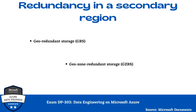Now we are going to talk about redundancy in the secondary region and what are the different types. There are two types: GRS, that is Geo-Redundant Storage, and GZRS. Let's discuss them one by one.